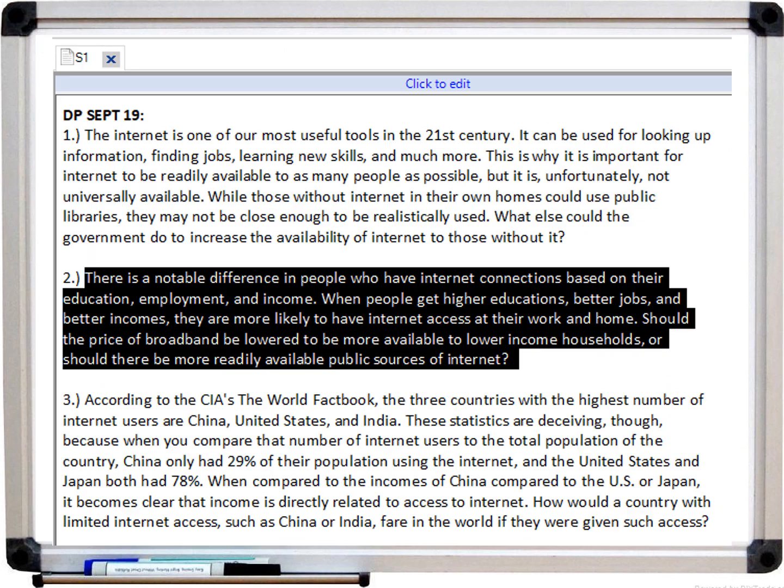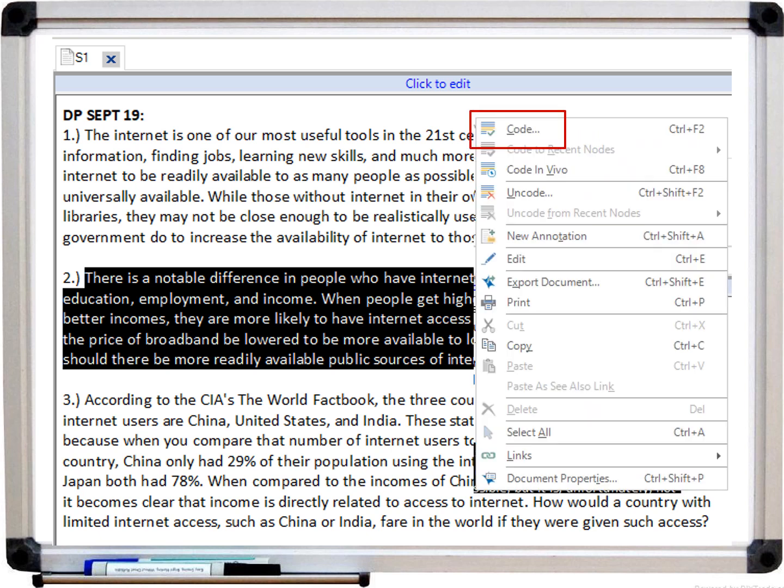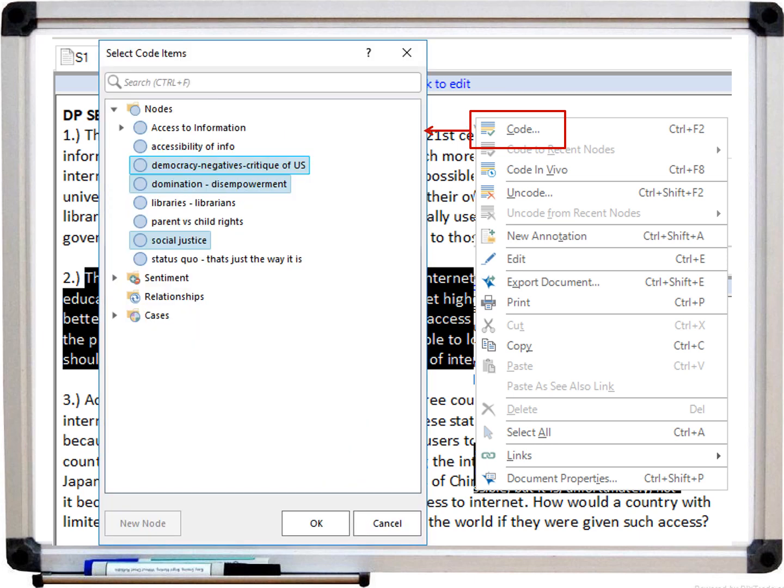Then you can start reading your data and highlight an interesting or relevant passage of text. Right-click it and select code. Then either code it at one or more nodes you previously created or code it at a brand new node.